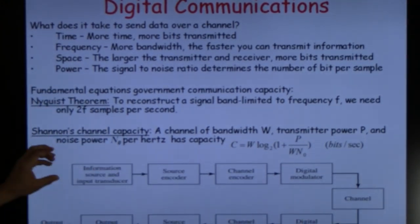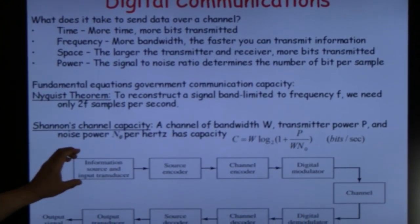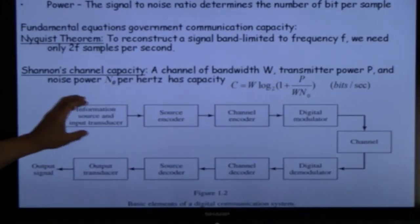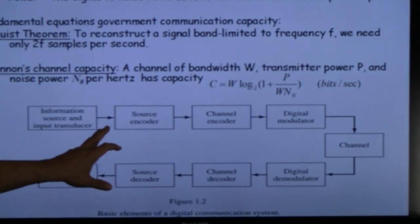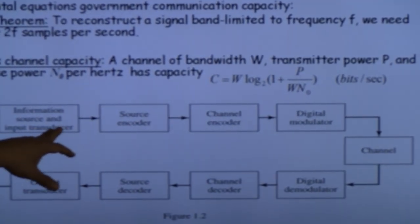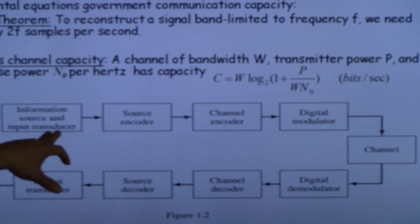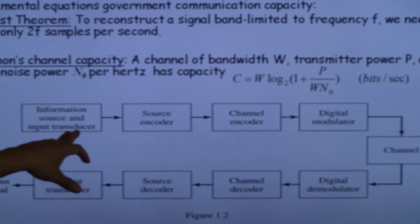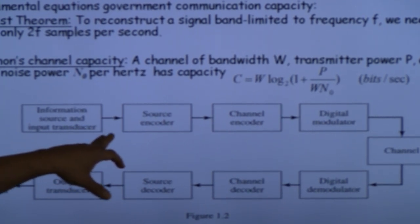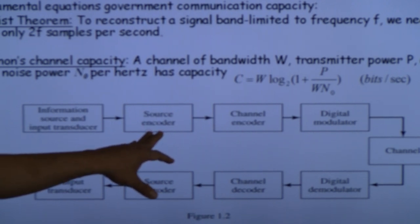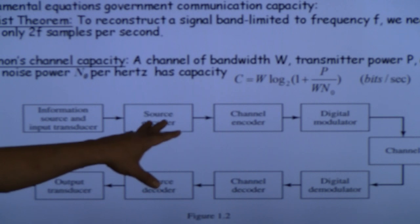You need to convert the information source, which is analog in format, into a digital format. In this process, you need to transfer the signal from a speech signal into an electrical signal. You need to do what is known as source encoding, which involves first sampling the signal, quantizing the signal, and compressing the signal.